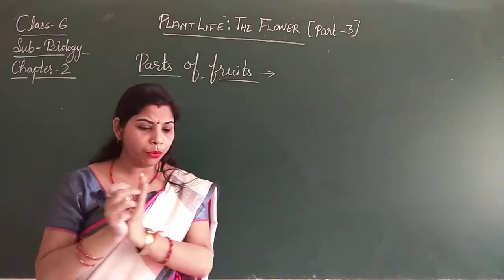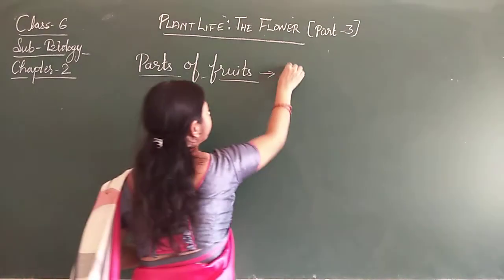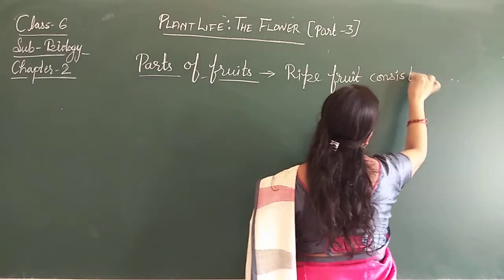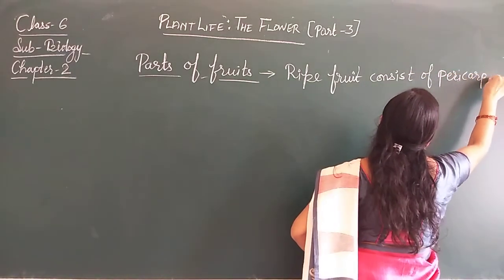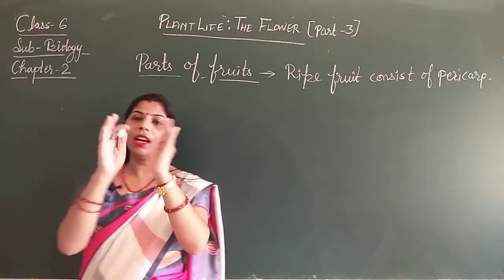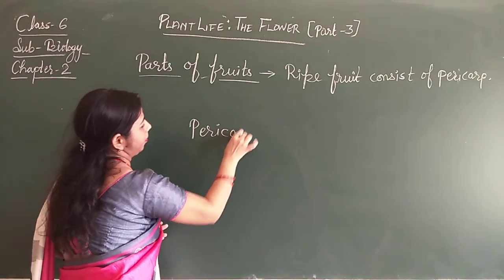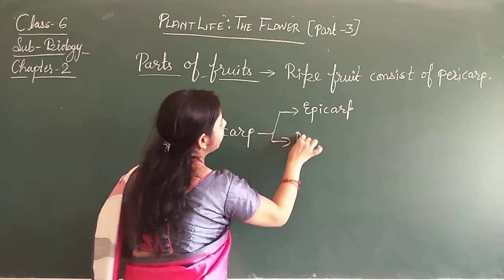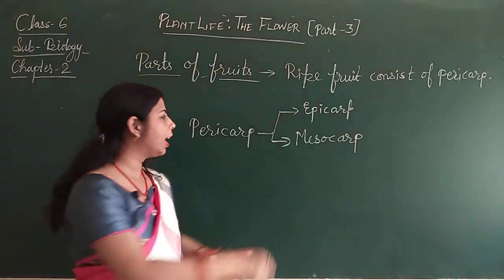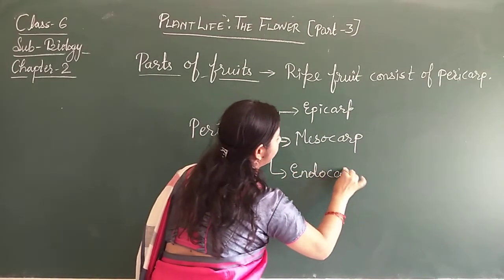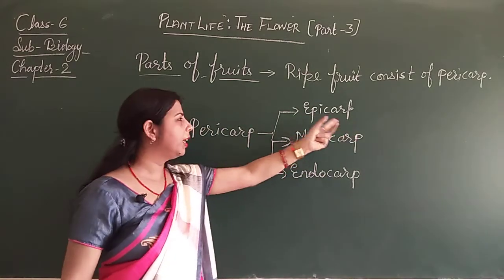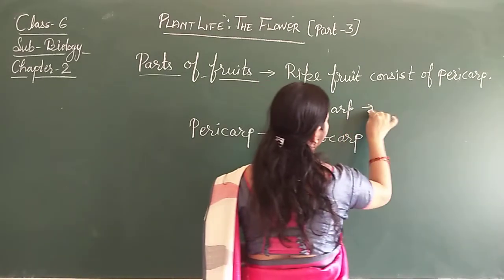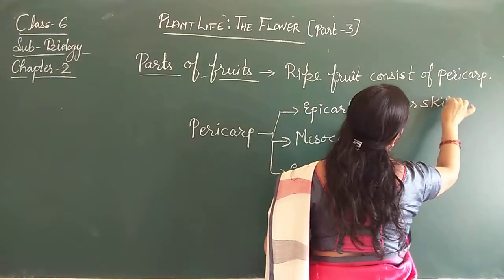A ripe fruit consists of the pericarp. This pericarp has three parts: the first is the epicarp, the second is the mesocarp, and the third is the endocarp. What are these parts and how are they useful? The epicarp is the outer skin of the fruit which protects it.